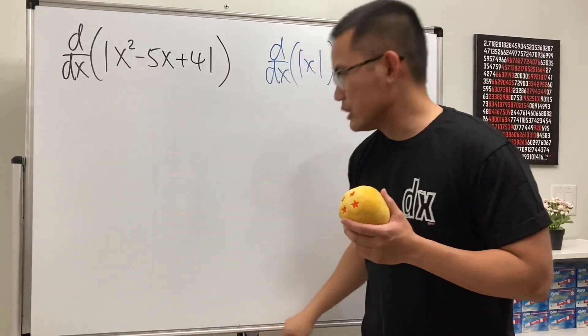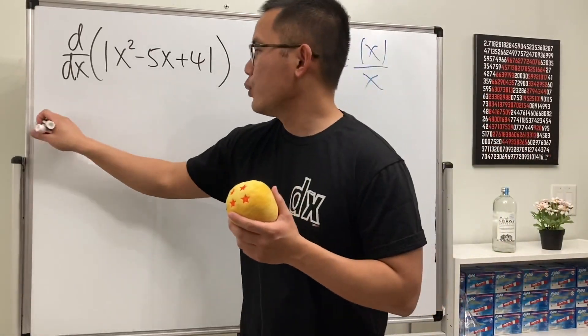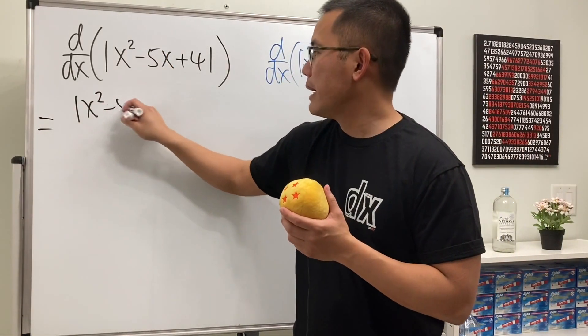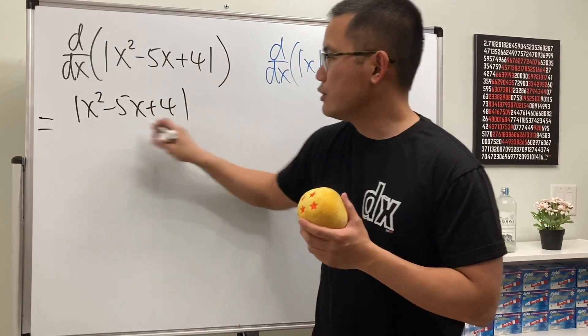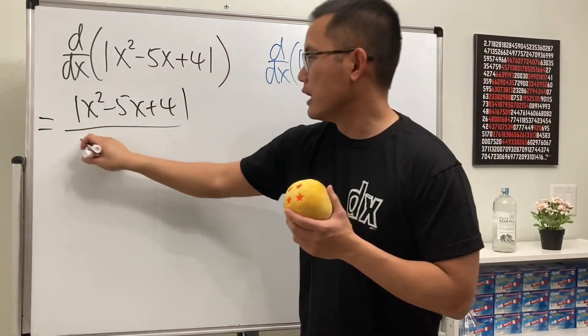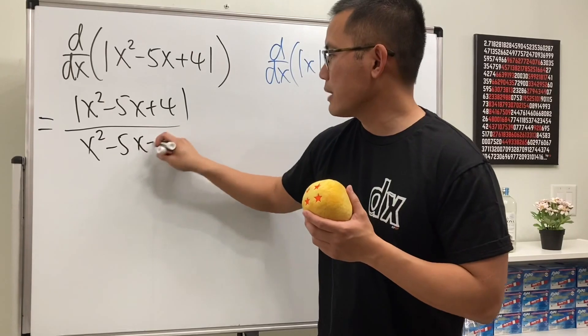So right here, we can just use the following, the blueprint. So we are going to just have this on the top, absolute value of x squared minus 5x plus 4, and then don't forget to divide it by the bottom, which is x squared minus 5x plus 4.